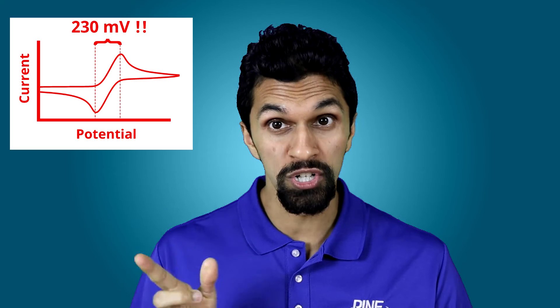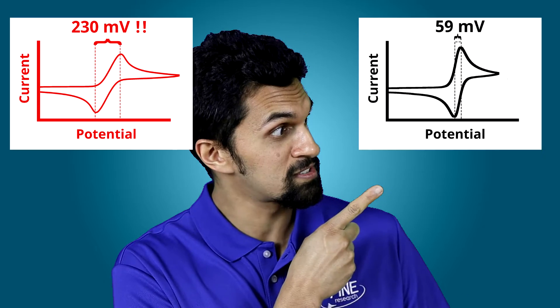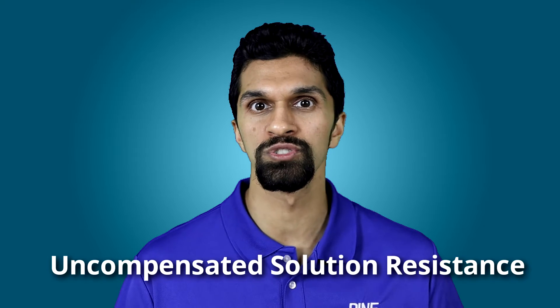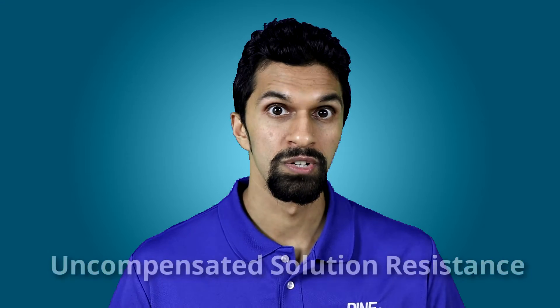Hey folks, in this video we'll be talking about what is IR drop, or sometimes called ohmic drop, in electrochemistry. If you've taken cyclic voltammograms that look a little something like this but should look a little bit more like this, then you're probably dealing with an IR drop — sometimes called an uncompensated solution resistance problem — which is what we'll be talking about today.